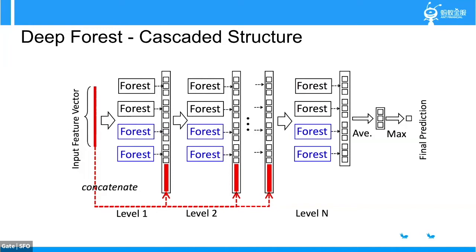In the first layer, we train four different forests, and each forest makes some predictions. In this example, we are doing a three-class classification problem, so each forest predicts the probability distribution for each class — that's why you see three boxes from each forest. On the next layer, we add those augmented features in addition to the original features. For example, the original features might be 100, then on the second level we are training models using 112 features, and so on until there's no performance gain on some validation set. I'll go through details of how we use XGBoost to train those forests in a moment.